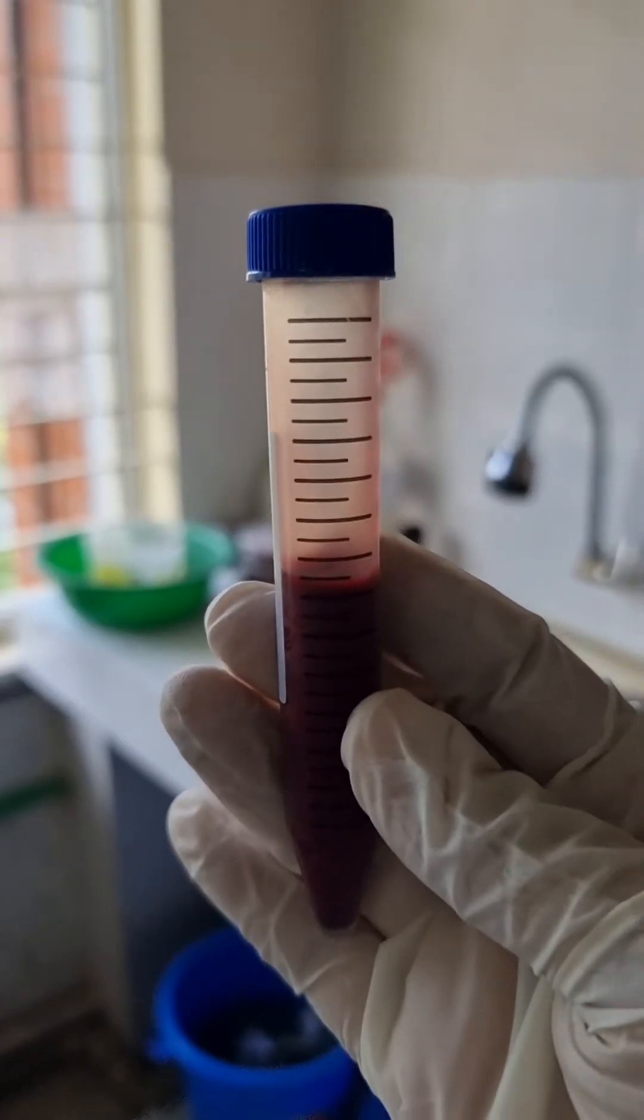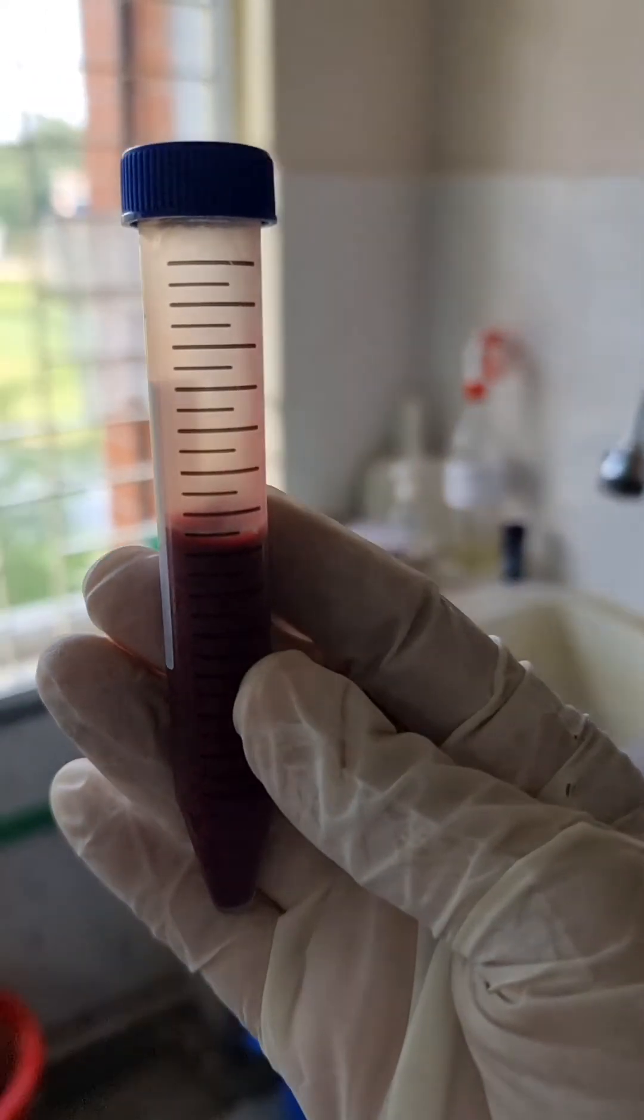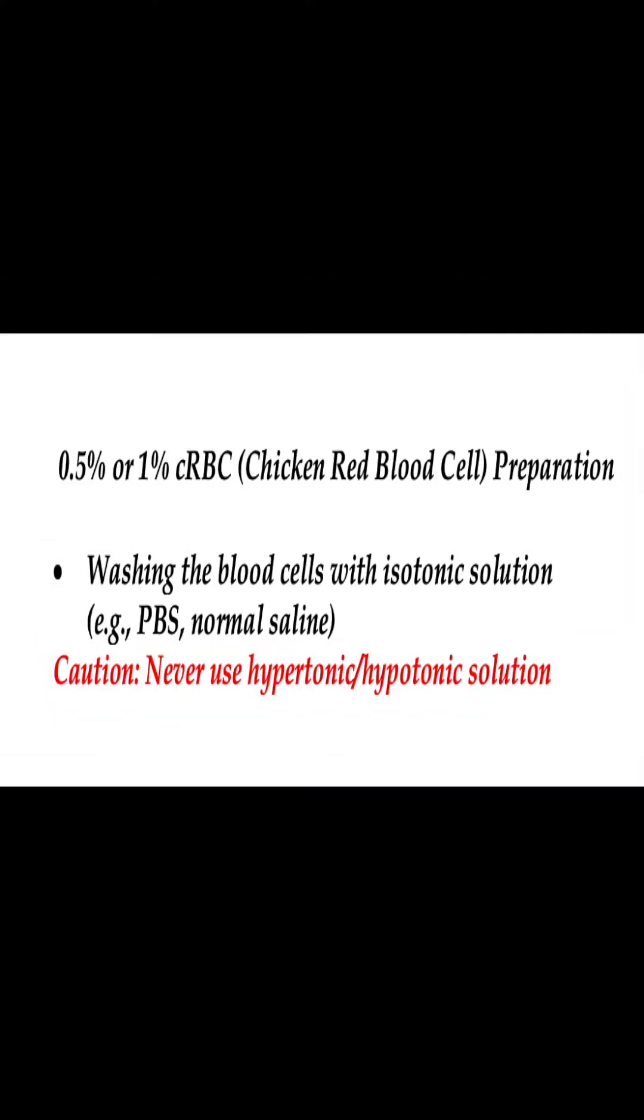First of all, we have to make 0.5 percent chicken RBC from the collected blood. The procedure starts by washing the RBC three times with phosphate buffer solution or any other isotonic solution.